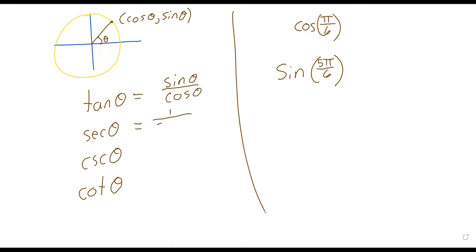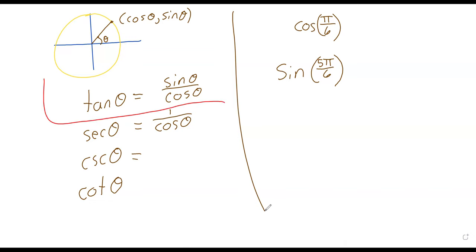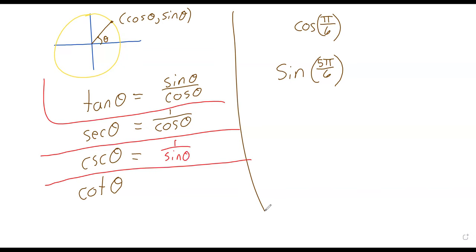The textbook's a little weird. It says these are sort of the fundamental identities. I wouldn't really call them identities - I'd call them definitions. The tangent is the sine over the cosine. The secant is 1 divided by the cosine. The cosecant is 1 divided by the sine, and the cotangent is the cosine over the sine.